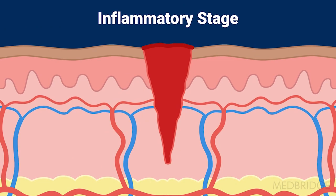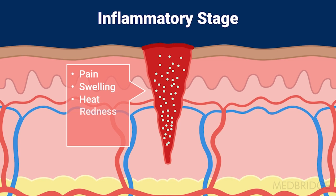In the inflammatory stage, white blood cells migrate into the wound. This is accompanied by pain, swelling, heat, redness, and functional loss.